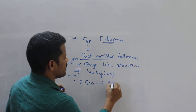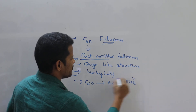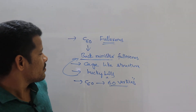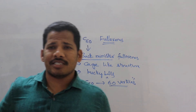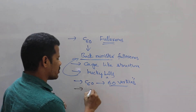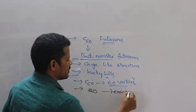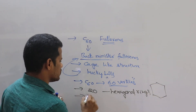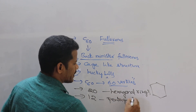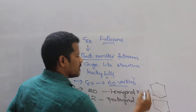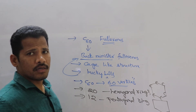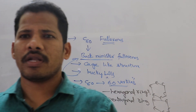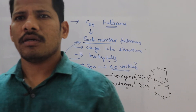Carbon-60 contains 60 vertices — that is why it is called carbon-60. The total number of hexagonal rings is 20, and there are 12 pentagonal rings. A 6-membered ring is called a hexagonal ring; a 5-membered ring is a pentagonal ring. So fullerene shows both hexagonal rings and pentagonal rings.